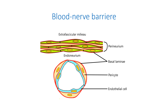The blood vessels entering the endoneurium from the perineurium are covered with a sleeve of perineurial cells. The endothelial cells and pericytes are connected with tight junctions and have a continuous basement membrane. Endoneurial capillaries, unlike epi- and perineurial ones, are lined with non-fenestrated endothelial cells containing few endocytotic vesicles. Thus, the blood-nerve barrier is represented by endothelial sites connected with tight junctions, pericytes and basal lamina of the capillaries. And the perineurium, as a part of the blood-nerve barrier, defends the endoneurium from extrafascicular blood vessel leakage.